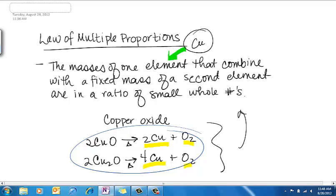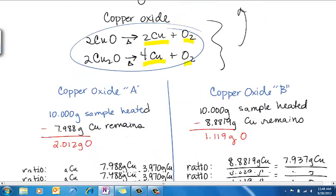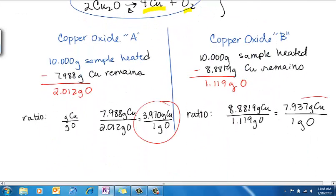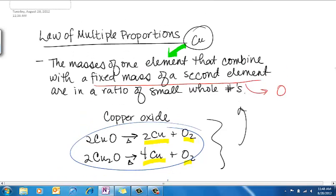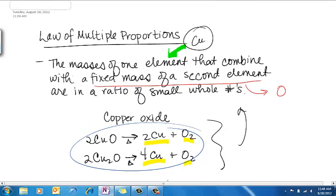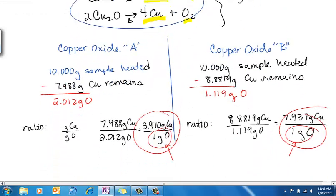That combine with a fixed mass of a second element, our second element here is oxygen. When we look at those ratios, notice I've simplified both of these so that it's per 1 gram of oxygen. So that's our fixed mass of the second element.